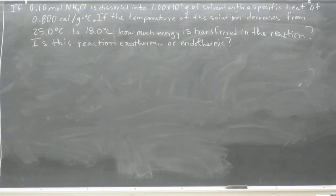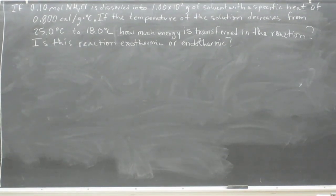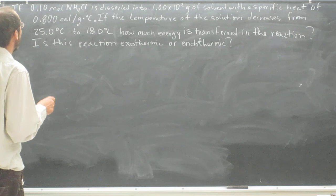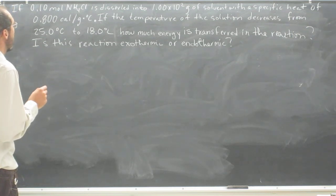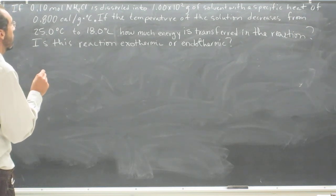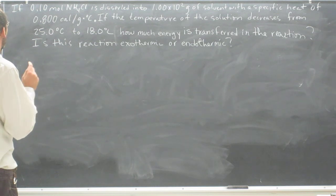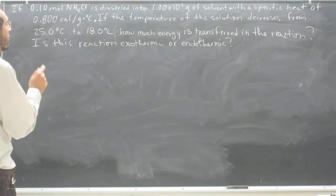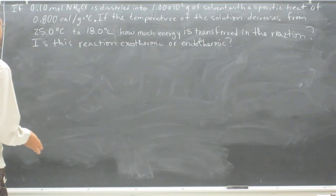Okay, let's try this one more time. If 0.1 moles of ammonium chloride is dissolved into 100 grams of solvent with a specific heat of 0.800 calories per gram times degrees Celsius, and the temperature of this solution decreases from 25 degrees Celsius to 18 degrees Celsius, how much energy is transferred in the reaction, and is this reaction exothermic or endothermic?